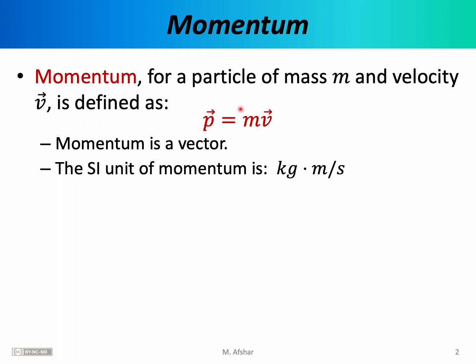This vector is defined as the product of mass, which is a scalar — more specifically it's a positive scalar — and the velocity vector. Remember that when you multiply a vector by a positive scalar, you're simply changing the size of that vector, but you're not changing its orientation. What that means is that the velocity vector and the momentum vector always point in the same direction.